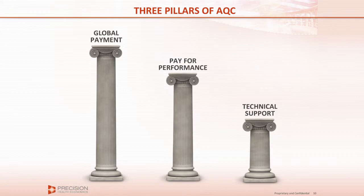The Alternative Quality Contract had three pillars. The first is the global payment. The second is a pay-for-performance initiative on top of the global payment, where provider groups could earn up to 10% of the global payment additionally if they met certain quality benchmarks. So you have the global payment — say two, three, or $4,000 per member per year — and then on top of that you can get up to 10% more, roughly $300 a year, if you meet all the pay-for-performance targets.